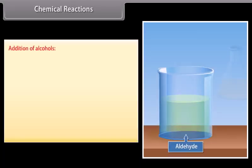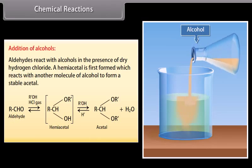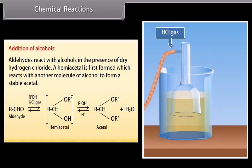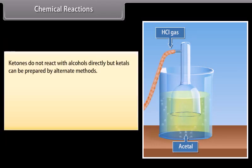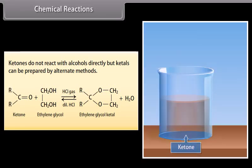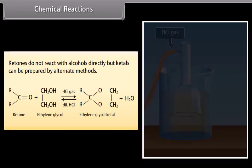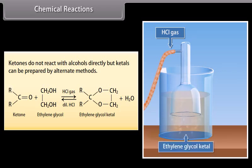Addition of alcohols: aldehydes react with alcohols in the presence of dry hydrogen chloride. A hemiacetal is first formed, which reacts with another molecule of alcohol to form a stable acetal. Ketones do not react with alcohols directly, but ketals can be prepared by alternate methods. Ketone reacts with ethylene glycol in the presence of hydrochloric gas to form ethylene glycol ketal along with water.